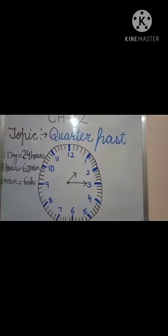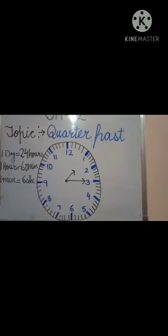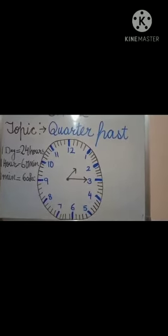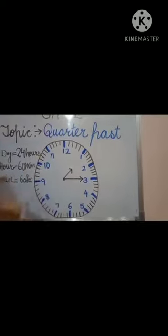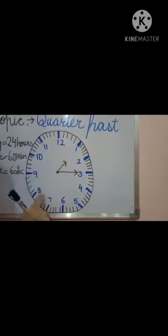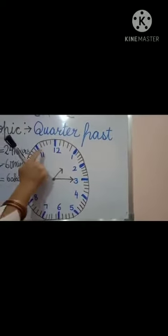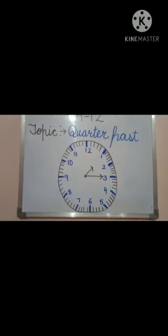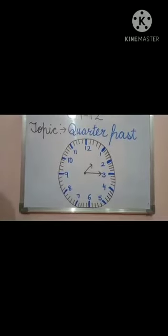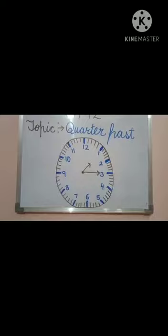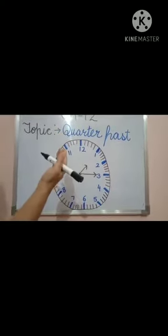I will tell you how many numbers are there in a clock — there are 12 numbers in a clock. Now let's begin with the next topic: Quarter Past.